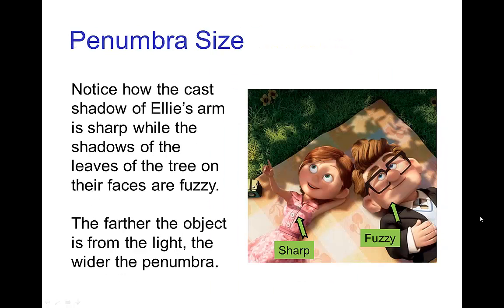Notice this effect of penumbra size is done nicely in this screenshot from Up. We look at Ellie's arm. Her arm is close to her body, so she has a nice sharp shadow with relatively little penumbra, but the shadows of the leaves on the tree are much fuzzier because they're farther away.